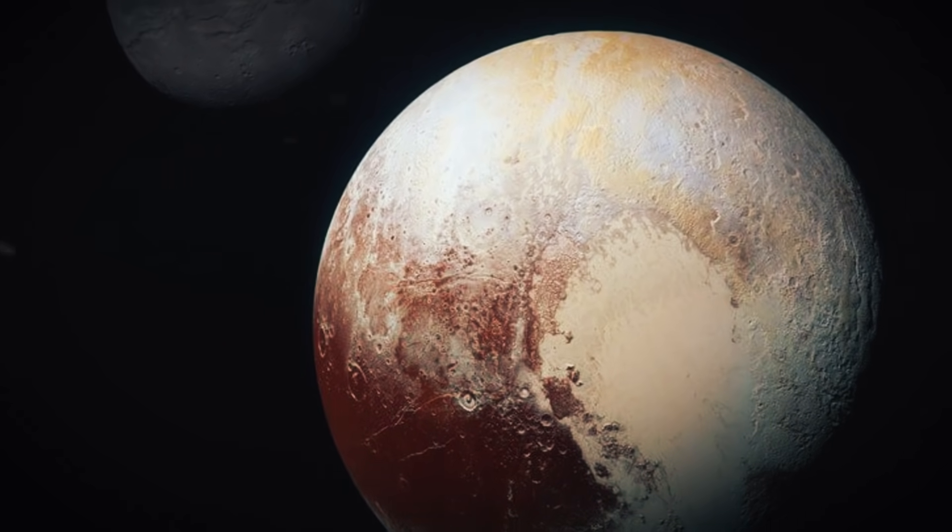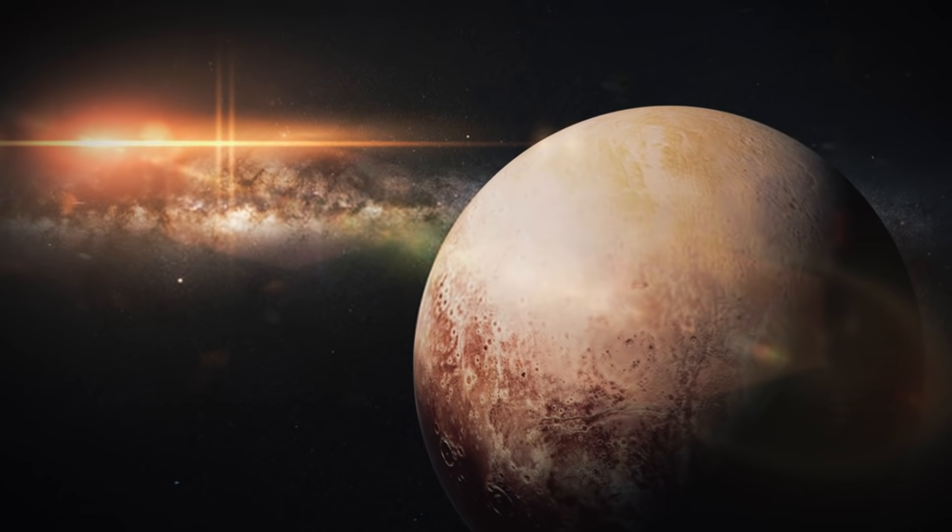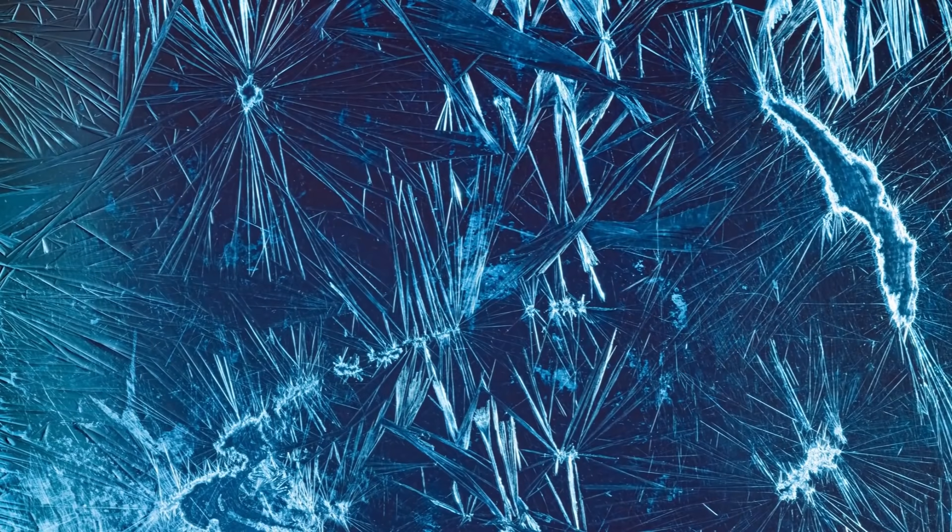New Horizons' photos revealed that Pluto's south pole seemed notably darker than its north pole. That proves that despite the fact that winter was approaching, there was not a lot of new nitrogen frost freezing out of the atmosphere.